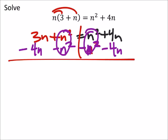So these cancel, but so do these as it turns out. So we're done with the n squared. 4n minus 4n is 0. That's what we wanted, a 0 on one side.